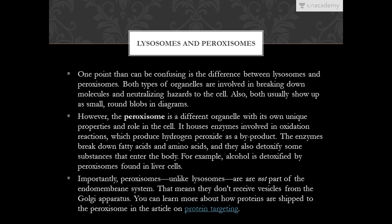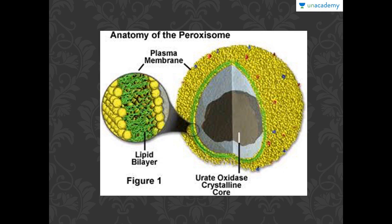One potentially confusing point is the difference between lysosomes and peroxisomes. Both organelles are involved in breaking down molecules and neutralizing hazards to the cell, and both appear as small round blobs in diagrams. However, the peroxisome is a different organelle — it houses enzymes involved in oxidation reactions and produces hydrogen peroxide as a by-product. These enzymes break down fatty acids and amino acids and detoxify some substances. Unlike lysosomes, peroxisomes are not part of the endomembrane system and do not receive vesicles from the Golgi apparatus.